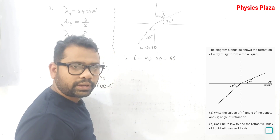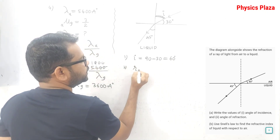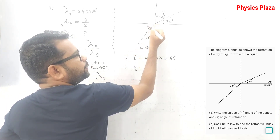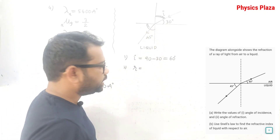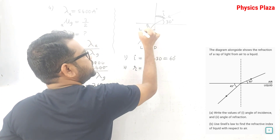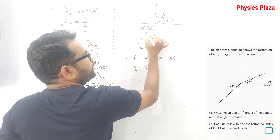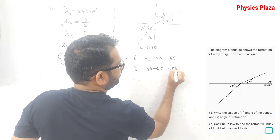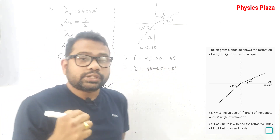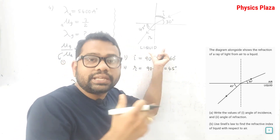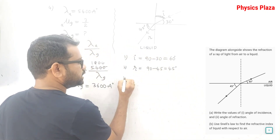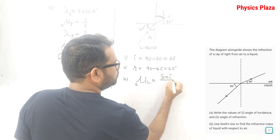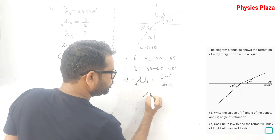The angle of refraction is 45 degrees as given directly. Now they ask us to calculate the refractive index of the liquid using Snell's law: μ_liquid = sin i / sin r = sin 60° / sin 45°. Sin 60° = √3/2 and sin 45° = 1/√2. Simplifying: (√3/2) ÷ (1/√2) = √3 × √2 / 2 = √6/2, which gives approximately 1.22.